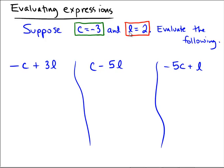In the first expression on the far left, it looks like we have negative c plus 3 times l. c is being replaced with negative 3 and l is being replaced with the number 2. So now what do we have?